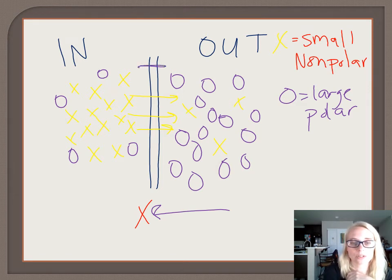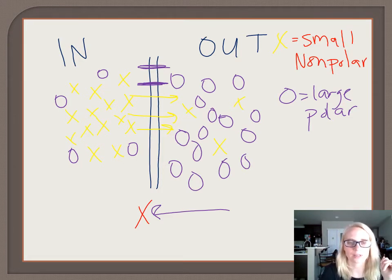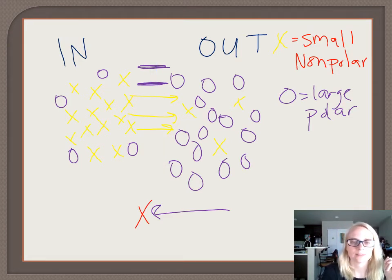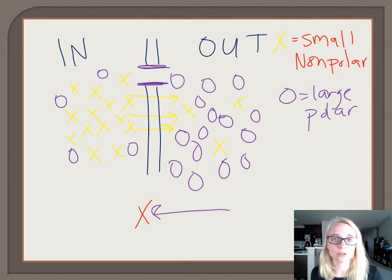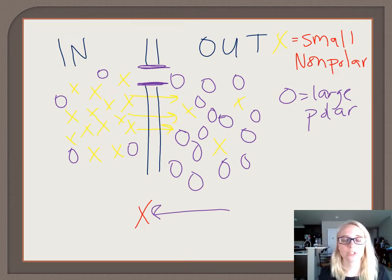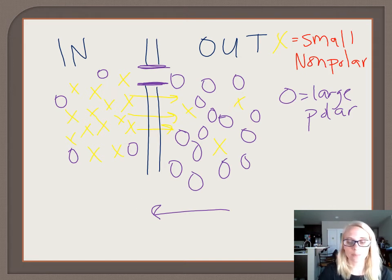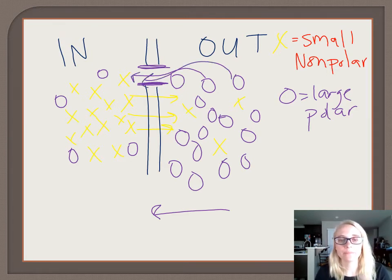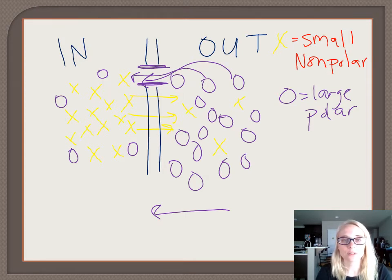What could we do to make the membrane permeable to the large purple circles? We could insert a channel — one of those carrier proteins or channel proteins. If we insert a channel protein, then we could allow the purple to go through. The purple circles could go down their concentration gradient until they reach equilibrium through this channel. So I've illustrated concentration gradient, simple diffusion, and facilitated diffusion.